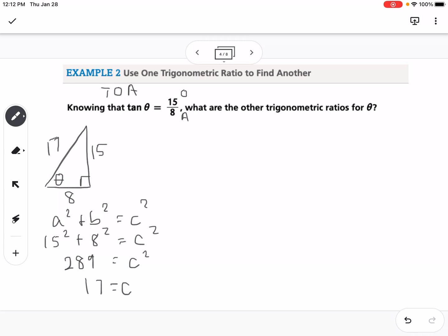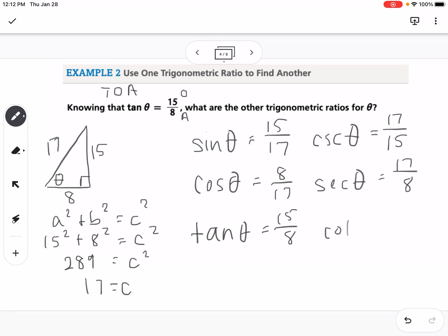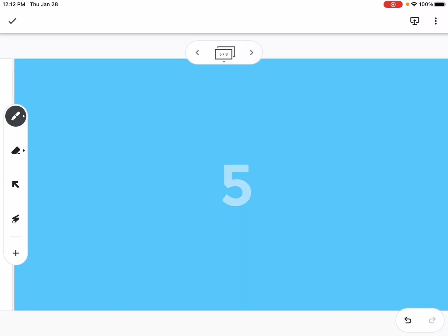Now, just like the previous problem, we can find all of our trig ratios. Sine opposite over hypotenuse would be 15 over 17. Cosine would be 8 over 17. Tangent we already know is 15 over 8. And we do the reciprocals, so cosecant would be 17 over 15, secant would be 17 over 8, and cotangent would be 8 over 15.